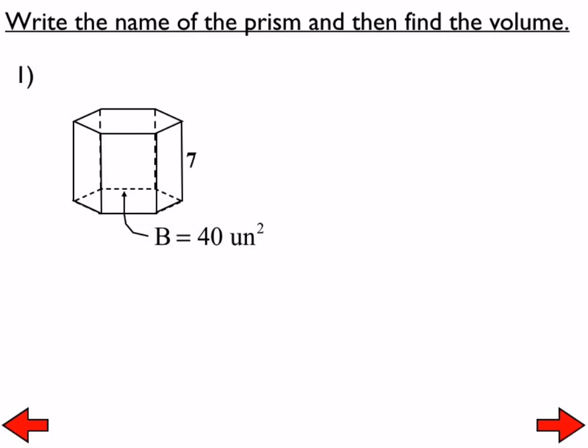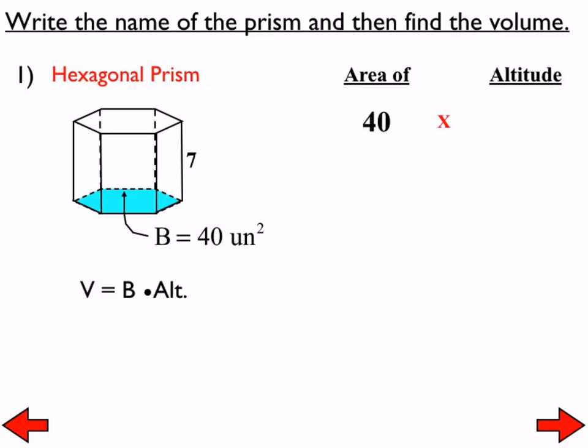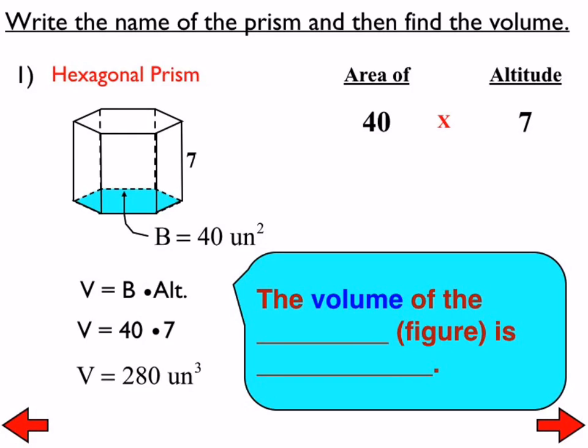Now, sometimes you're given the area of the base—that's our official number one. First, write down the name of the prism. What kind of prism is this one? It's a hexagonal prism. Now find the volume. Since we're given the area of the hexagon as 40 square units and the altitude is 7 units, the volume is 40 times 7, which equals 280 cubic units.